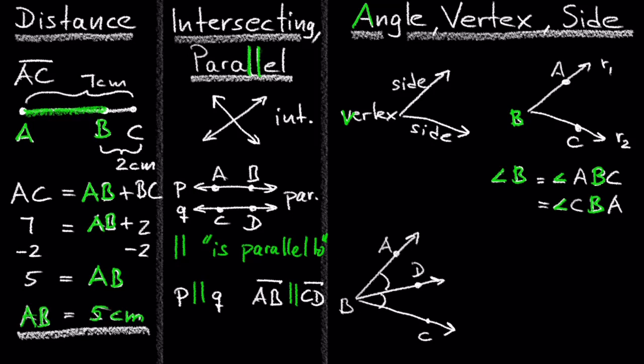An angle can also be named by a variable written between the rays close to the vertex. So in this example, angle X equals angle ABD, and angle Y equals angle CBD.